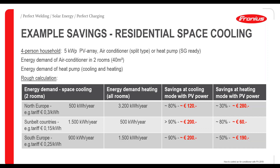The third example is southern Europe with a middle energy tariff of 25 cents per kilowatt hour. Space cooling uses 900 kWh per year and room heating uses 1500 kWh per year. The savings are 200 euros for cooling and 190 euros for heating. Total savings across scenarios range from 260 up to 400 euros per year, achieved just by controlling the air conditioning and room heating loads. Of course, this always depends on the country and where these systems are used.